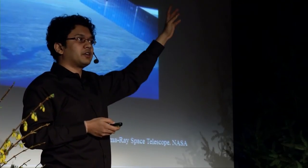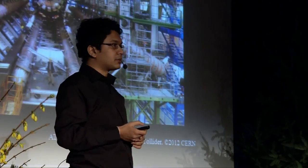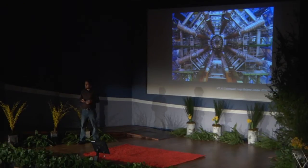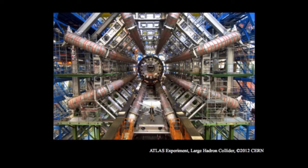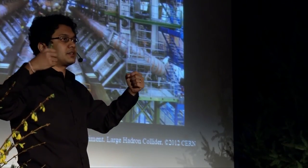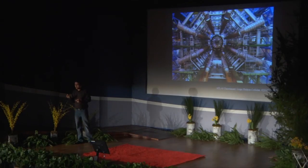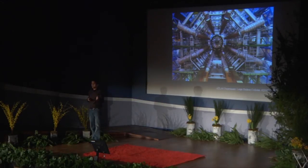Instead of looking for dark matter everywhere, why not just make it ourselves? Here's a picture of the ATLAS experiment, part of the Large Hadron Collider at CERN — the birthplace of the Higgs boson. You have beams of high energy protons that collide, producing a whole bunch of particles, and every now and then you see new particles. This is how the Higgs boson was produced, and this is how we hope to see dark matter as well. In summary, there are three places to look for dark matter: deep underground, out in space, or on the border of Switzerland and France.